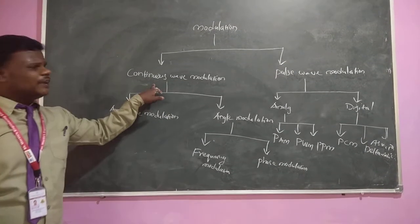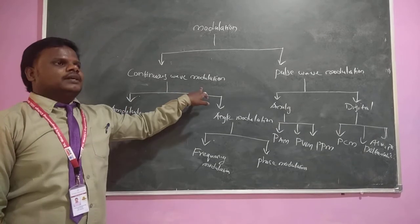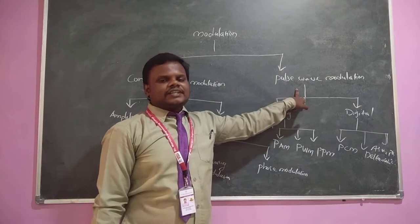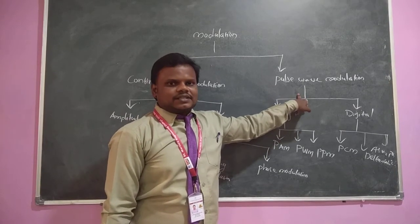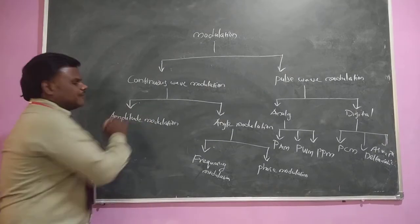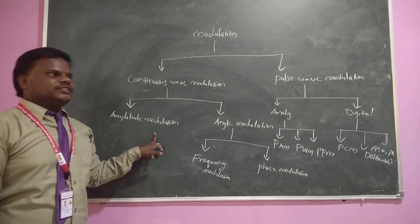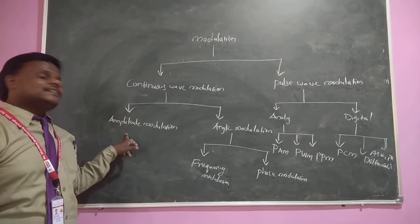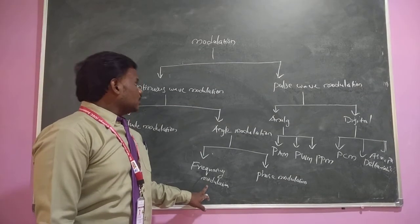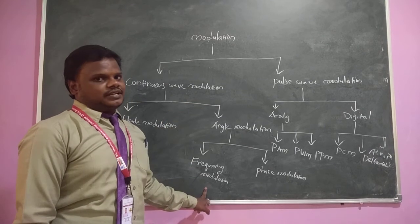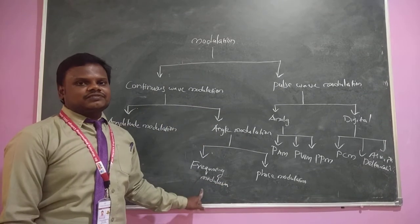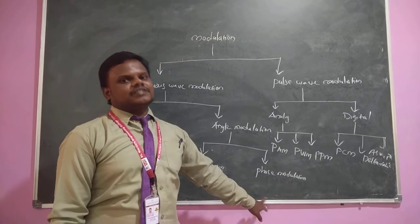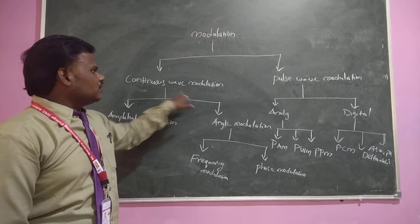Continuous wave modulation is the technique in which the carrier wave is a sinusoidal and continuous wave. In pulse wave modulation, we use a carrier signal which is a train of rectangular pulses. In amplitude modulation, the amplitude of the carrier signal varies with respect to the instantaneous values of the message signal. In frequency modulation, the frequency of the carrier signal varies with the instantaneous values of the message signal. In phase modulation, the phase of the carrier signal changes with respect to the message signal.